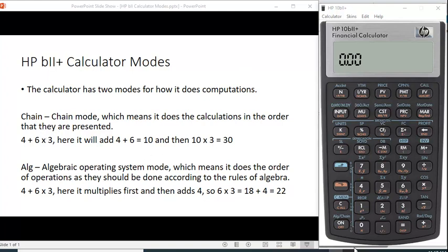There are two modes, and you can see down here in the bottom left-hand corner - I don't know how well you can see it on the screen - but above the On button in blue, it says ALG slash Chain.